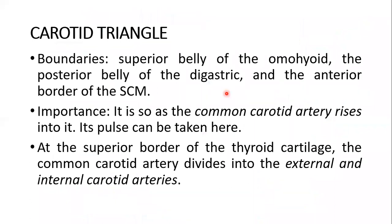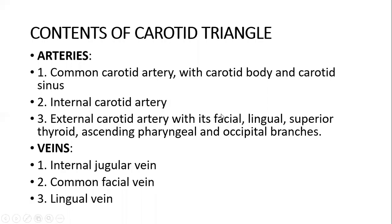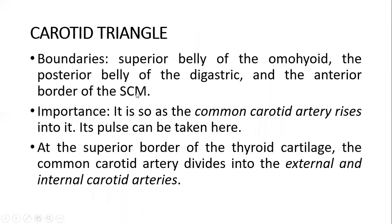The next triangle is the vascular triangle — the carotid triangle — named because of the presence of the carotid vessels. Its boundaries: posteriorly is the anterior border of the sternocleidomastoid; anteriorly is the omohyoid superior belly; and superiorly is the posterior belly of the digastric muscle. These are the boundaries of the carotid triangle.